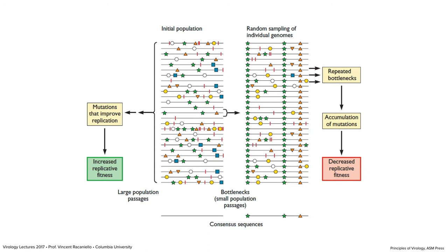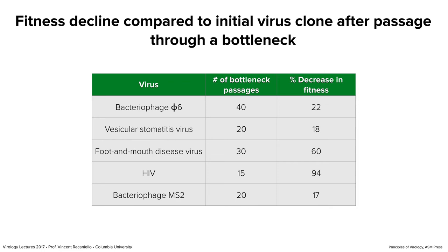Here's real-world data on fitness decline after bottleneck passage: a bacteriophage showed a 22% decrease in fitness after 40 bottleneck passages; VSV 18% after 20 passages; foot-and-mouth after 30 and 60 passages; HIV a big decrease after only 15 passages; another bacteriophage as well. This is a universal phenomenon among RNA viruses. The same would happen with DNA viruses, but since they're already way below the error threshold, you'd probably have to passage many more times to get the same effect.